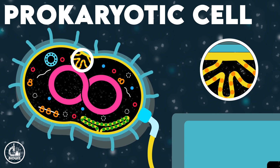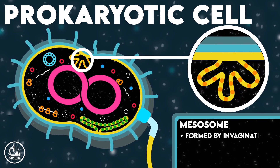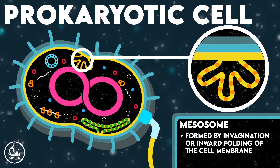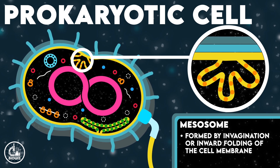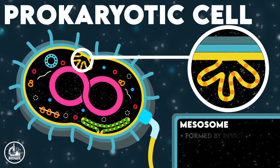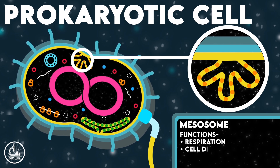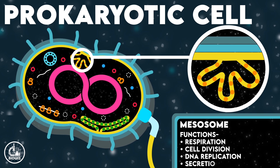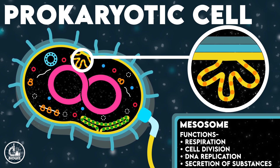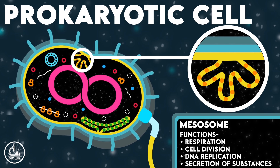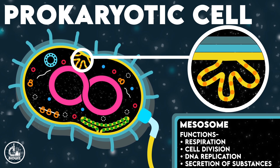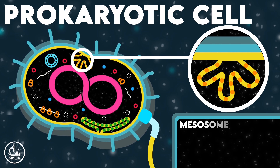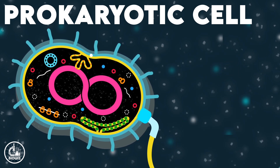Going inside the cell, mesosomes are the structures formed by inward folding of the cell membrane. The folding of the mesosome contains several enzymes. The functions of mesosomes include respiration, DNA replication, cell wall formation, and secretion of substances.